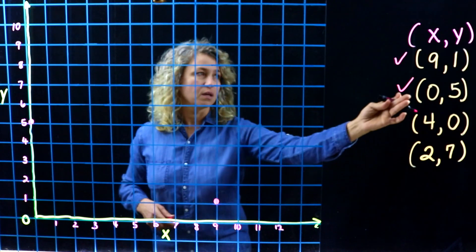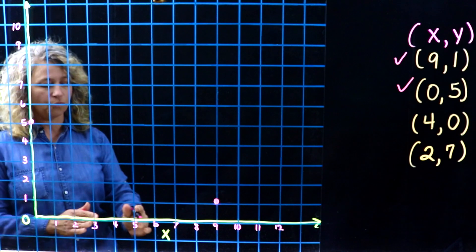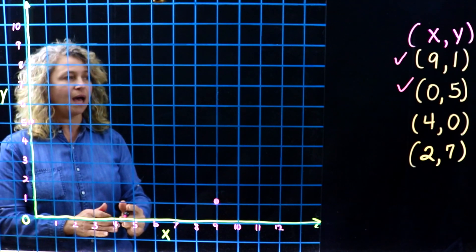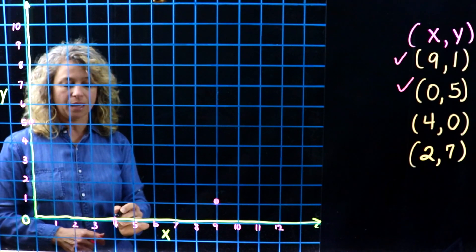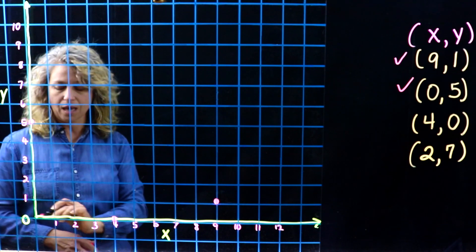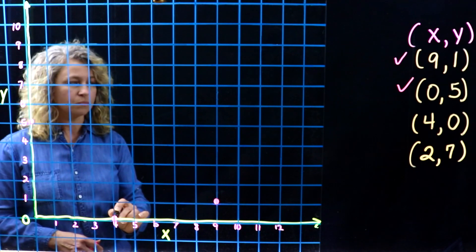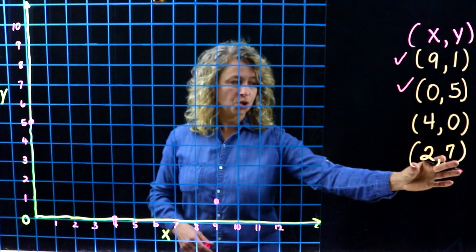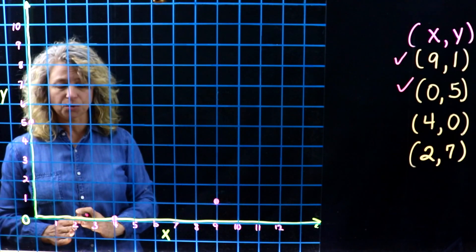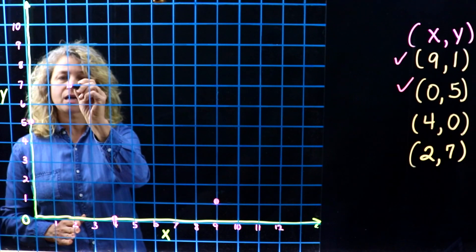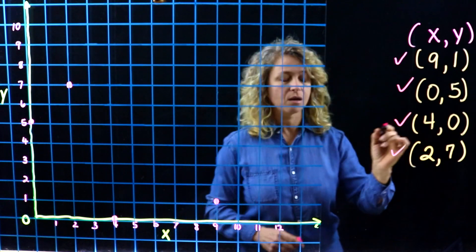Let's look at the next one: the X is four and the Y is zero, so we'll go over four and go up zero, and it remains on the zero line right here. Then for two comma seven, we go over two and up to seven. So here are just a few examples of how to plot coordinates on the grid.